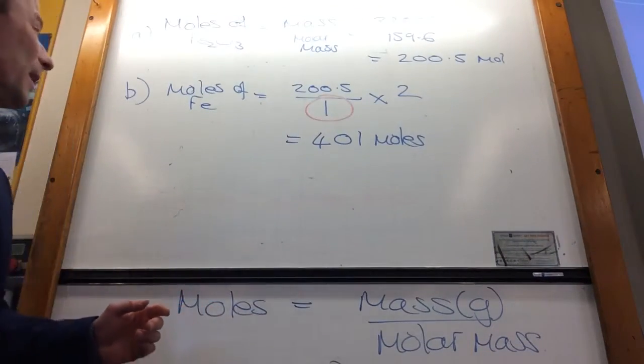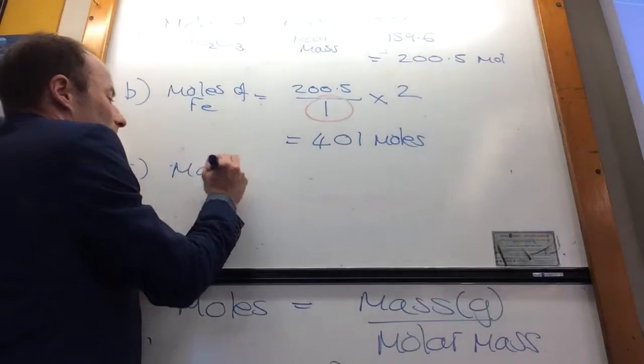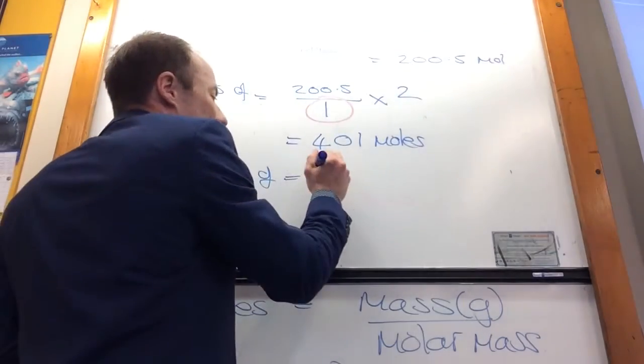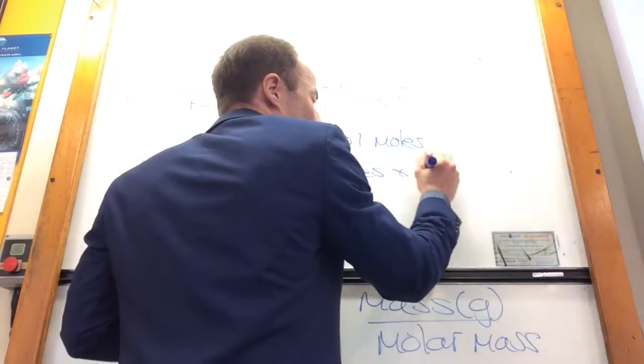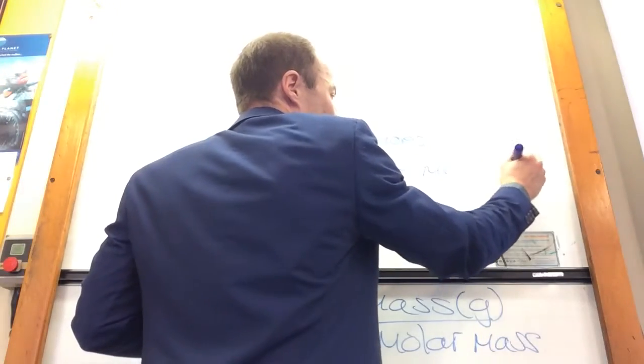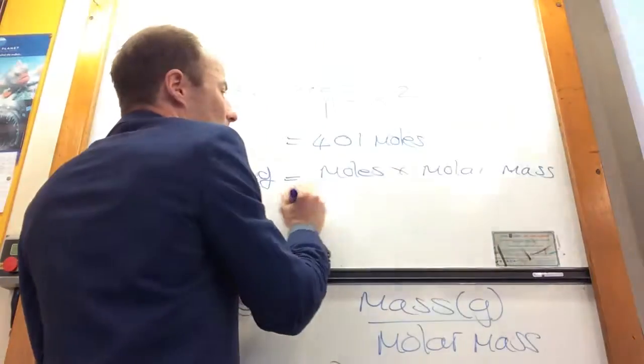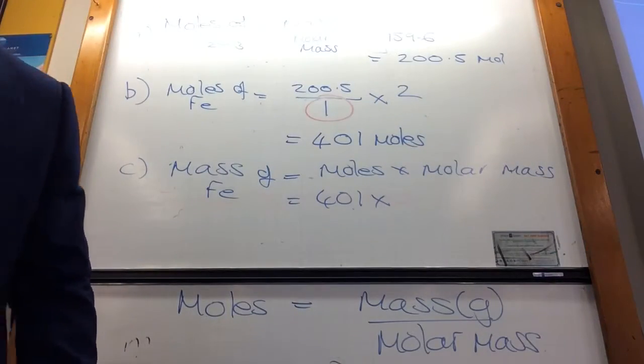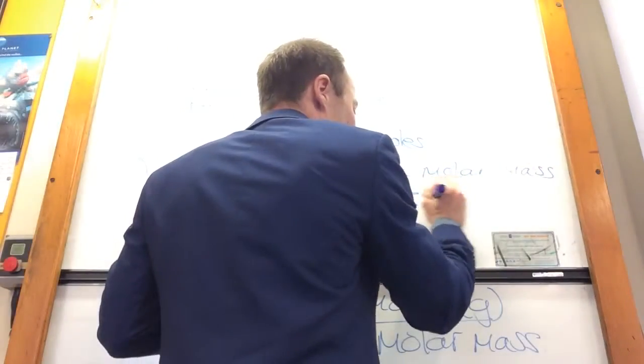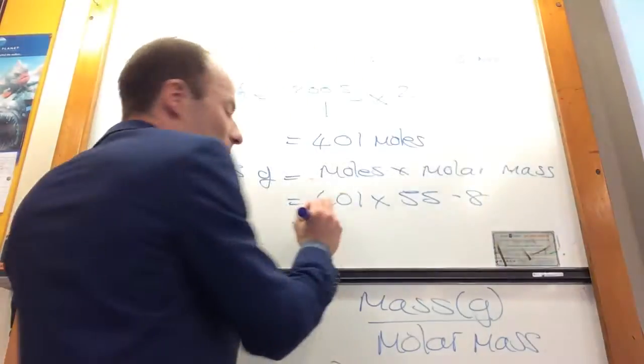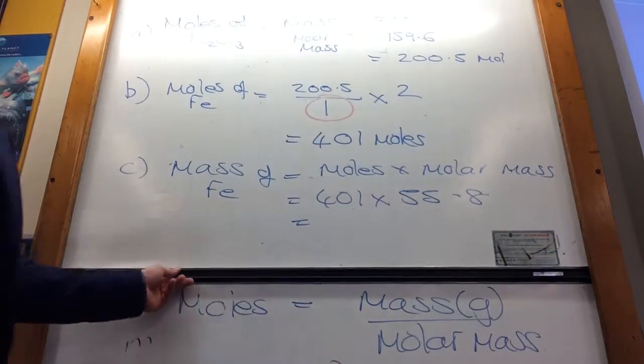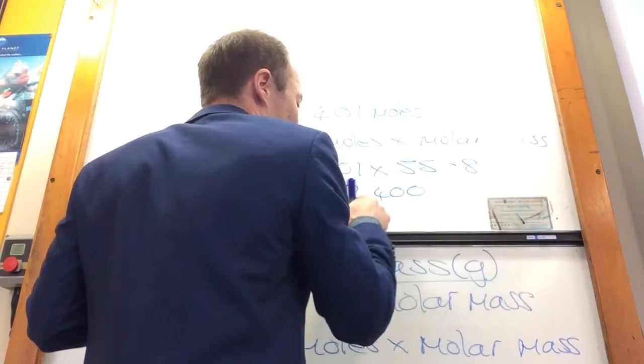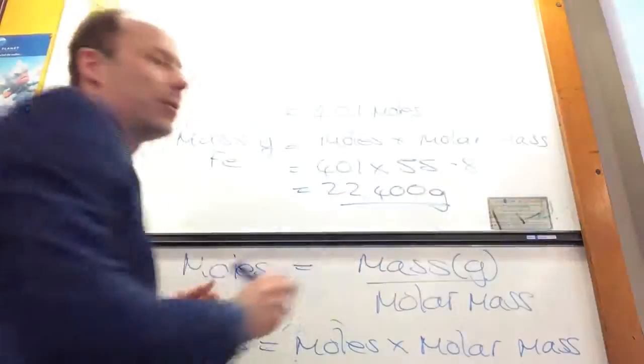Next bit's the easy bit. You've found the moles. The moles, how can you convert that to a mass of iron? Mass is moles times molar mass. The moles is 401. The molar mass of iron is 55.8. If you do that, you get it to be 22,400 grams, like so.